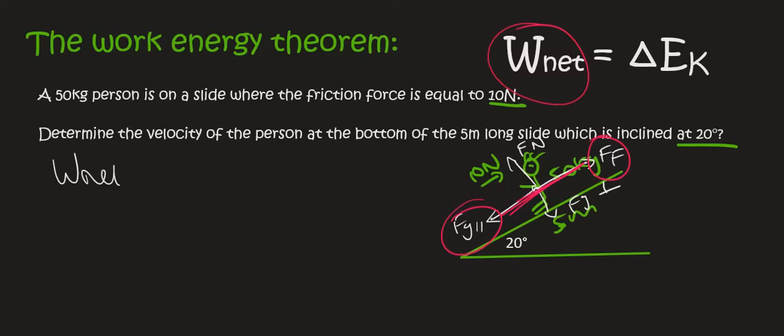Now we know that W net, well we know first of all that W is equal to F times delta x times cos theta. So if we want W net, then we must use F net.